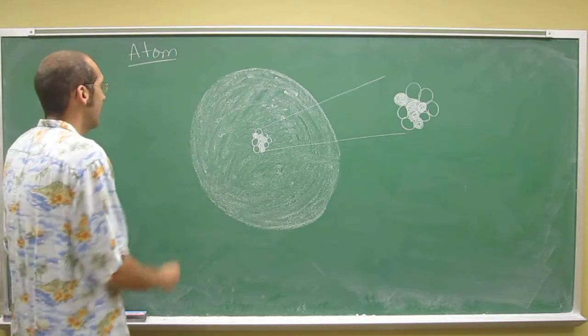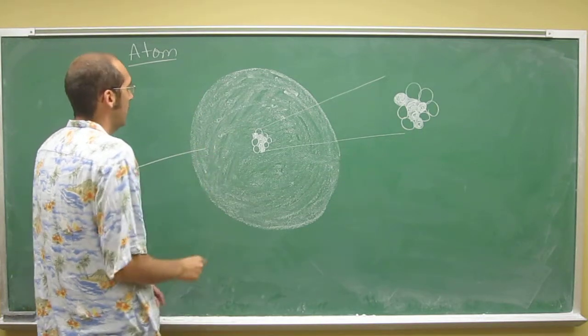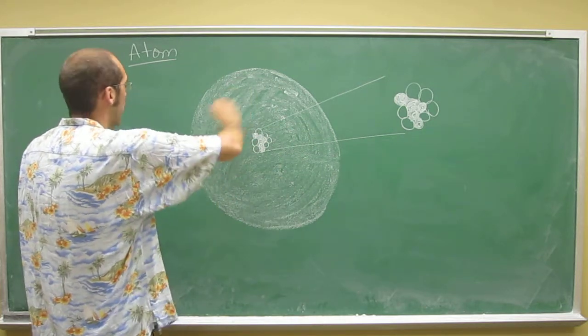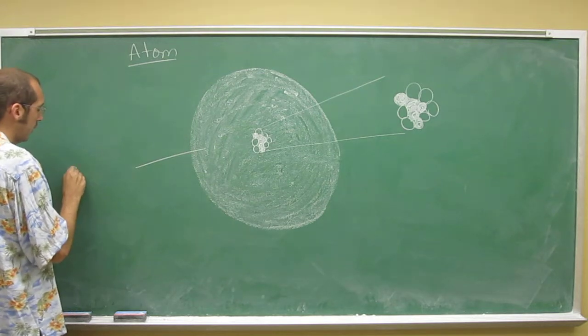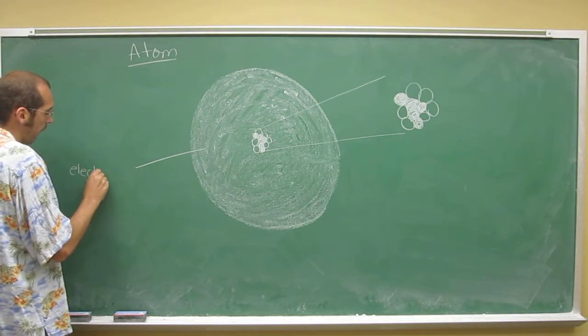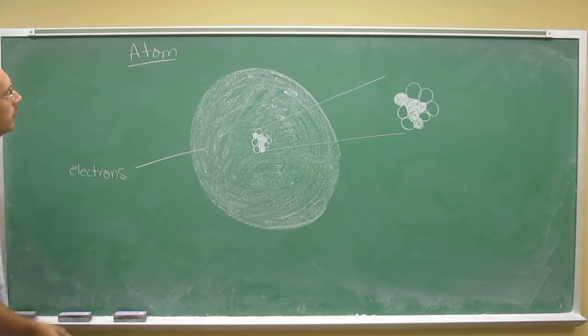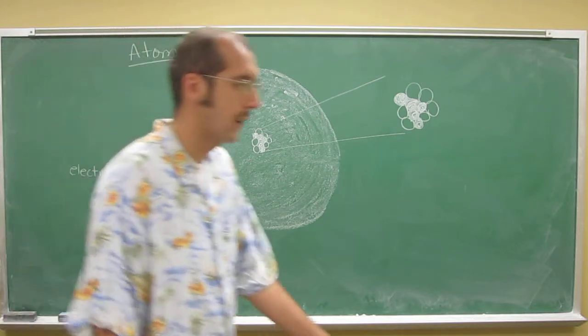So in this case, the subatomic particles that are represented by this white sphere out here are in fact the electrons of an atom. That's represented by the outer sphere.